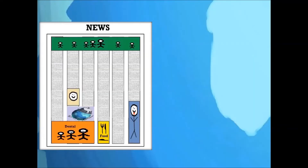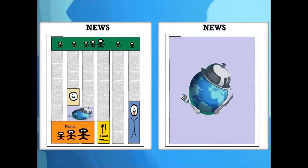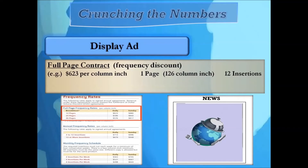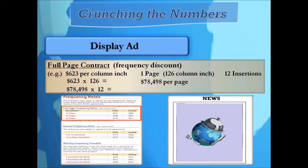Newspapers are often clogged with ads, and small ads are frequently overlooked, so some businesses prefer full page ads for maximum attention. Under the full page frequency rate you can run 12, 24, or 36 pages. Running 12 full pages: the rate is $623 per column inch. That's $623 times 126 column inches — $78,498 per page. Multiply that by 12 pages and the total is $941,976 to run 12 full pages of ads.